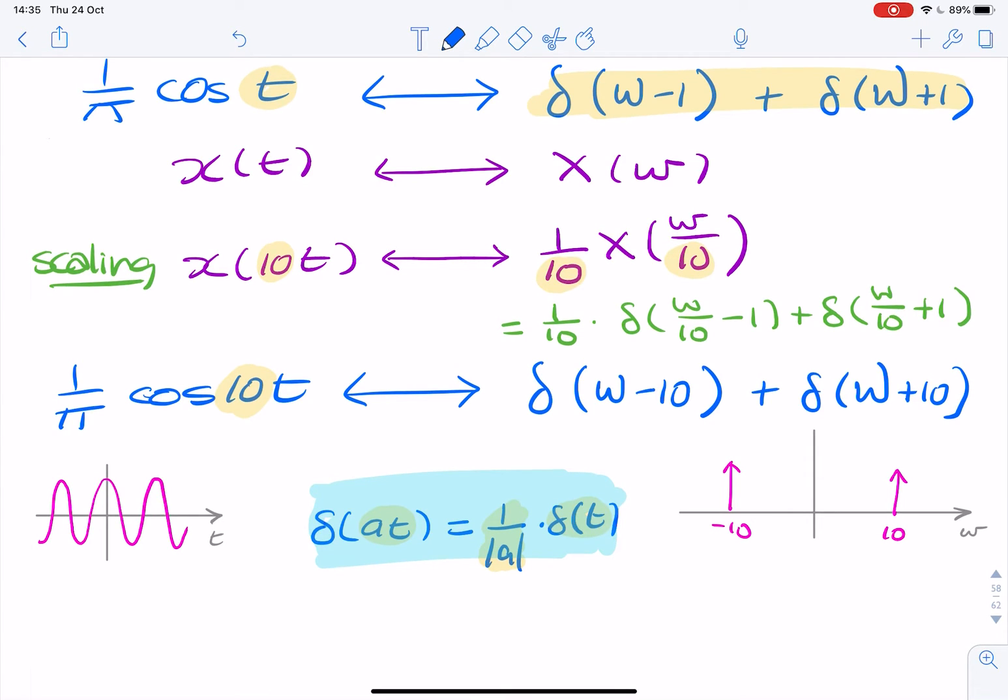So if a is 1 over 10, as it is in this question here, I could say that the delta Dirac, instead of t, I'll put omega, omega divided by 10, equals 10, because that's 1 over a, times a delta Dirac function like that.